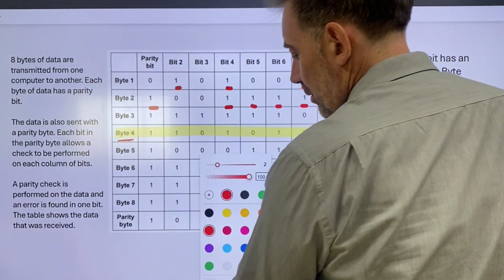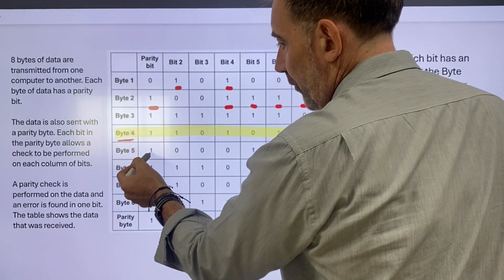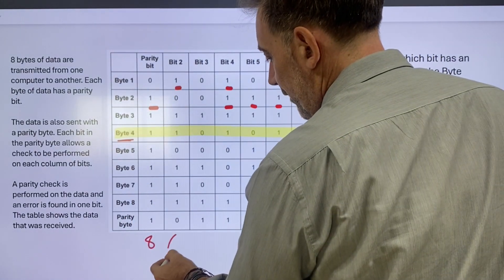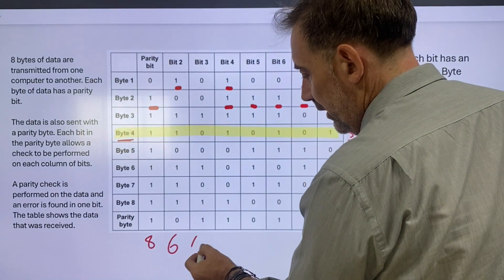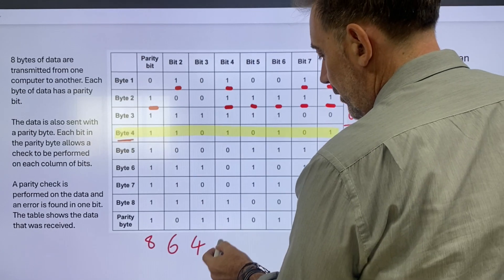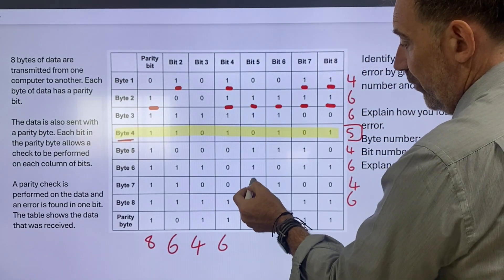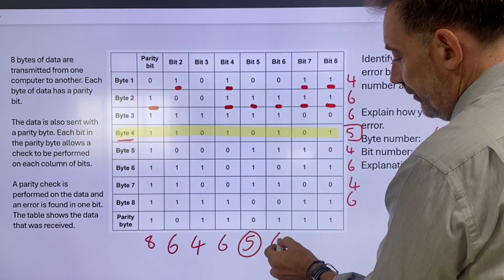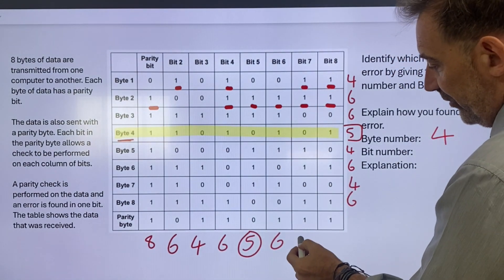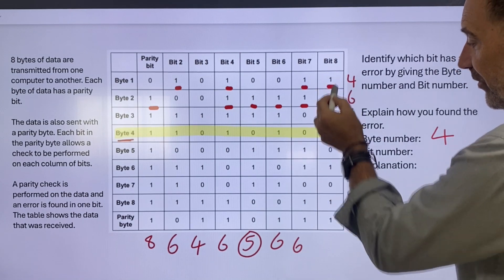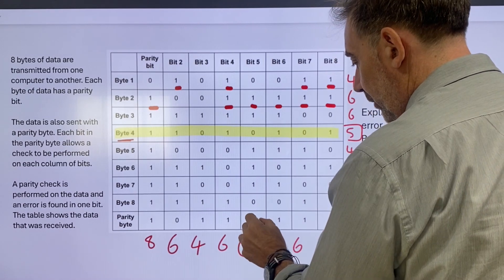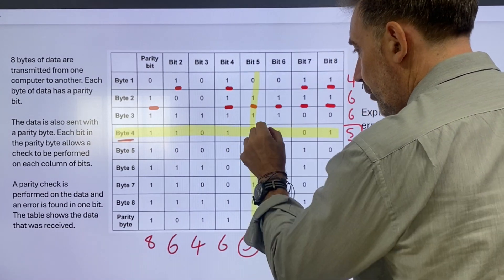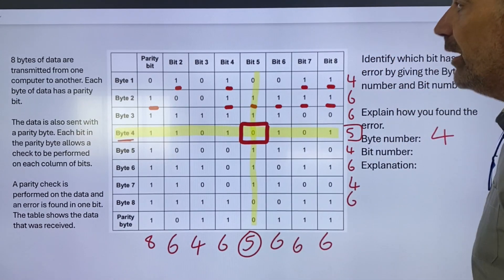So 1, 2, 3, 4, 5, 6, 7, 8. Even. 1, 2, 3, 4, 5, 6. Even. 1, 2, 3, 4, 5, 6. Even. 1, 2, 3, 4, 5, 6. 1, 2, 3, 4, 5, 6. 1, 2, 3, 4, 5, 6. So it's definitely this one as well. So we can say the problem is here. The problem is there.